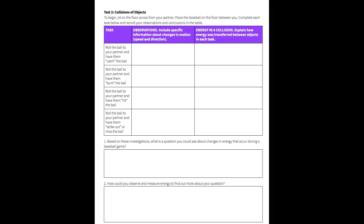In test two, students are going to look at the collision of objects and talk about the energy transfer that occurs when they collide. In task three, students will roll the ball to their partner and have the partner hit the ball. They should see a change in motion — the ball might go faster or slower. They'll also see and hear energy transfer, because the ball changed its motion and made a sound, which tells us that sound energy was created.